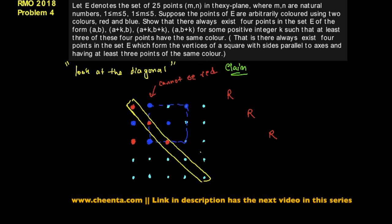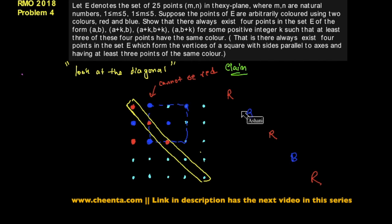So three consecutive diagonal points cannot all be red. The colouring must alternate — red, blue, red, blue, red — since three consecutive same-colour points are impossible. And three consecutive blue points are also impossible, for the same reason.